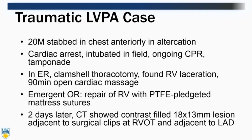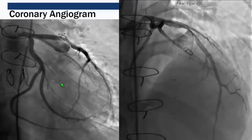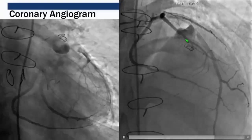My colleague Dr. Joel Price brought him to the OR and repaired the RV with a PTFE pledgeted suture. Two days later, CT revealed a mass in front of the RVOT adjacent to the LAD. This mass — a pseudoaneurysm — appeared as a contrast-filled collection adjacent to the pledgeted suture and the LAD, raising the question of whether there was a connection between the pseudoaneurysm and the LAD.